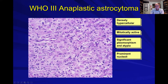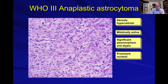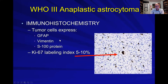On histology you can see they are more hypercellular, but what's really different now is the remarkable cellular and nuclear atypia. You're also going to see more mitotic activity and more vascularity. These will be positive for GFAP and S100, and the KI67 index is a little bit higher — now up in the 10% range.